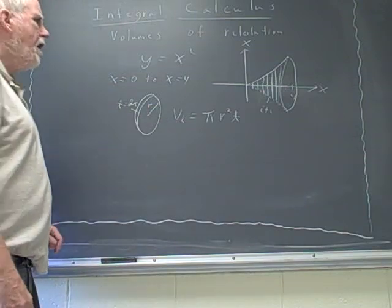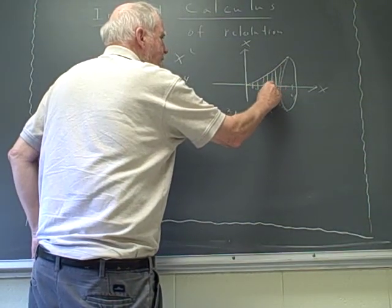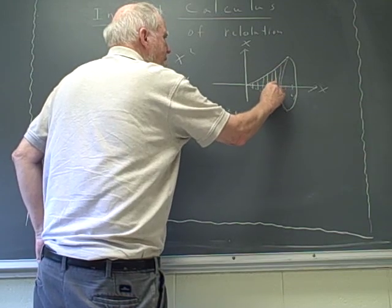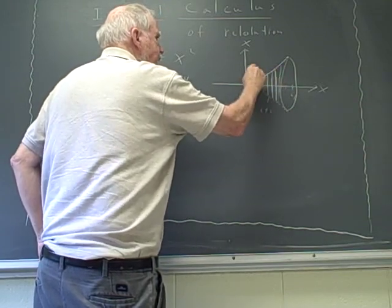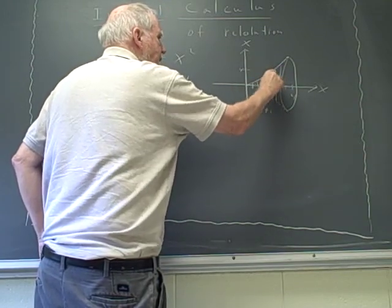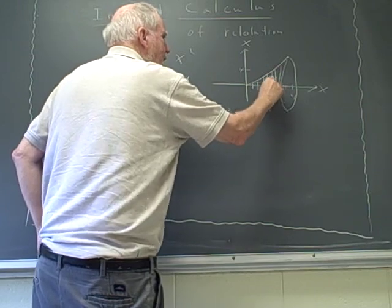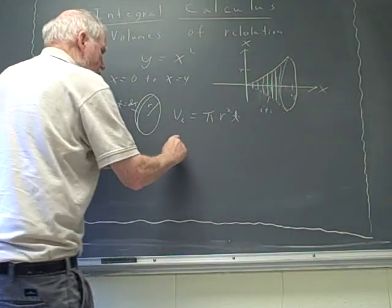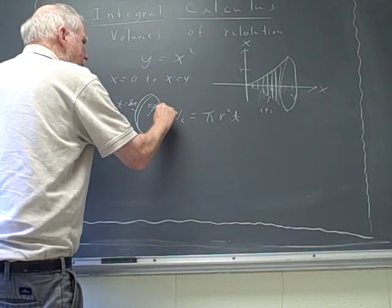And then r is how high this thing is, and I say I'm doing this one right here, from here to here. And this distance is just the y value, isn't it, at that particular x sub i. So we'll just call that, we'll now change, we'll call this y sub i.